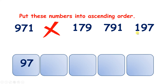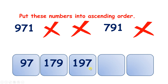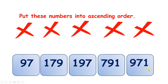Two numbers have one hundred, so now we need to compare the tens. Here we have seven tens, and that's smaller than nine tens, so one hundred and seventy-nine is our next smallest number, and then we have one hundred and ninety-seven. Now we have a three-digit number with seven hundreds, and we know that will be smaller than any three-digit number with nine hundreds, so seven hundred and ninety-one is our next smallest, and nine hundred and seventy-one is the largest number.